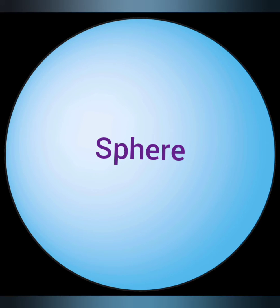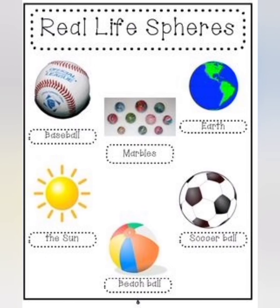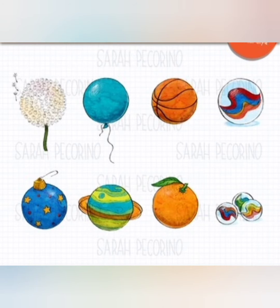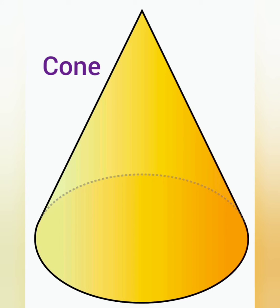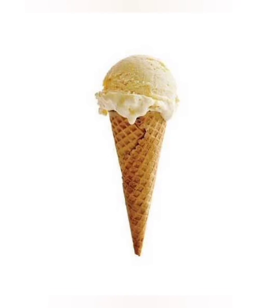Now coming to sphere. A sphere has one curved face — it is round in shape, with only one curved face. There are no edges or corners. A cone has one flat face and one curved face. It also has one edge and one vertex.